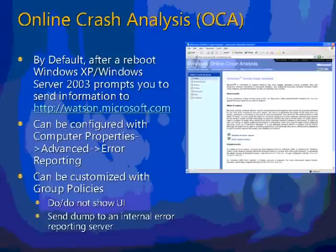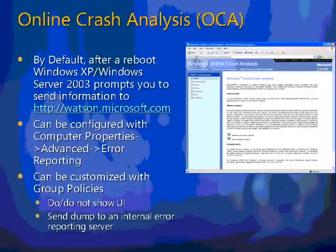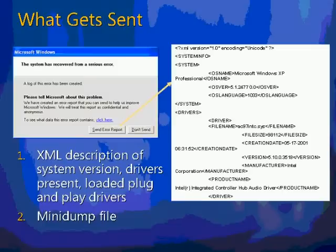If you've crashed a Windows XP or Server 2003 system, you know that when you reboot you get a dialog that apologizes and asks you to send crash information to Microsoft to make Windows better. What's happening is your crash is being sent to Online Crash Analysis. You can configure this with group policies or via Computer Properties, Advanced tab, Error Reporting dialog. What gets sent to OCA is an XML file describing your system — Windows version, configured drivers — as well as a minidump file. Hence, you get the minidump for free.